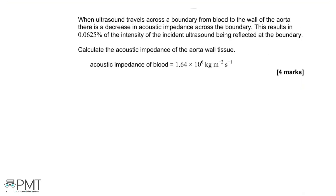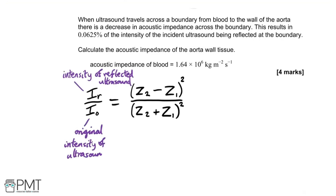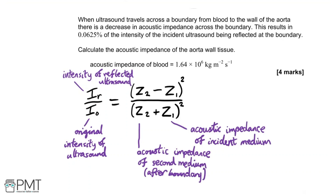When ultrasound travels across a boundary from blood to the wall of the aorta there is a decrease in acoustic impedance. This results in 0.0625 percent of the intensity of the incident ultrasound being reflected at the boundary. Calculate the acoustic impedance of the aorta wall tissue, given the acoustic impedance of blood is 1.64 × 10⁶ kg m⁻² s⁻¹. Write down the equation for acoustic impedance: IR/I₀ = ((Z₁ − Z₂)/(Z₁ + Z₂))², where IR is the reflected intensity, I₀ is the original intensity, and Z₁ and Z₂ are the acoustic impedances.